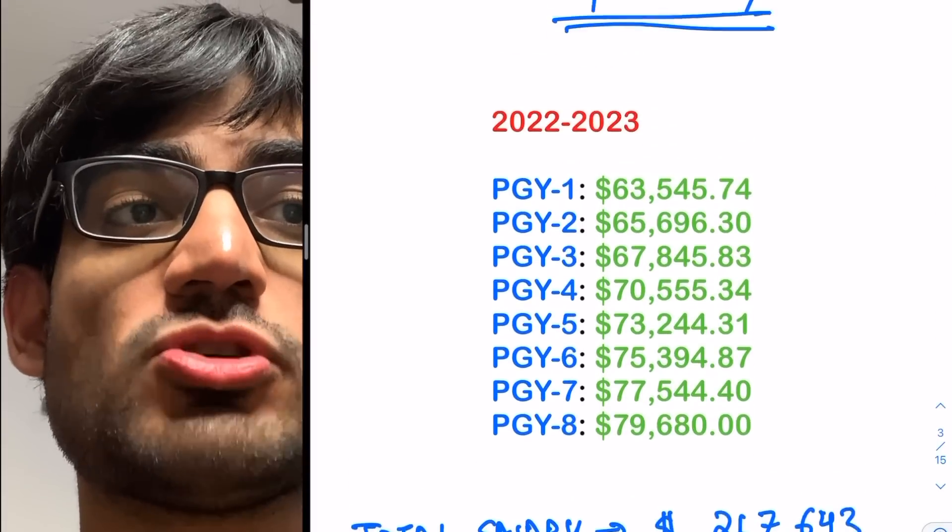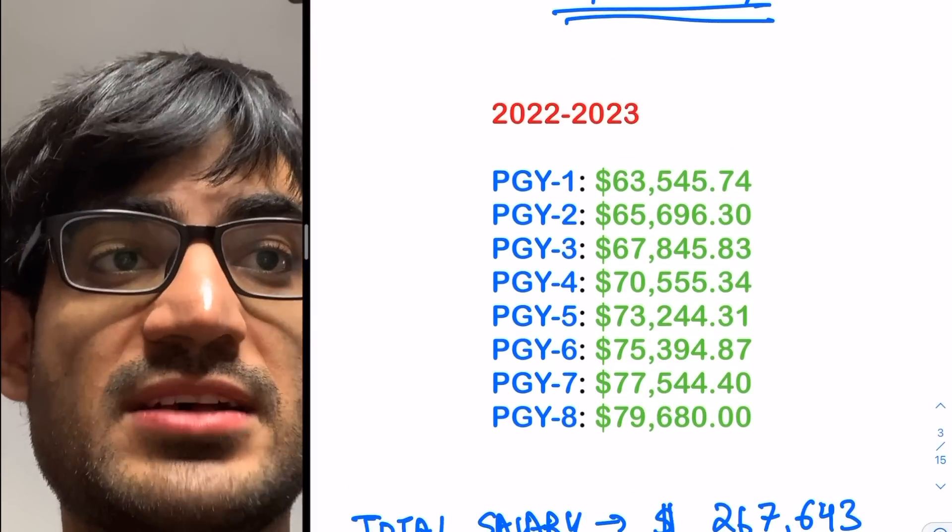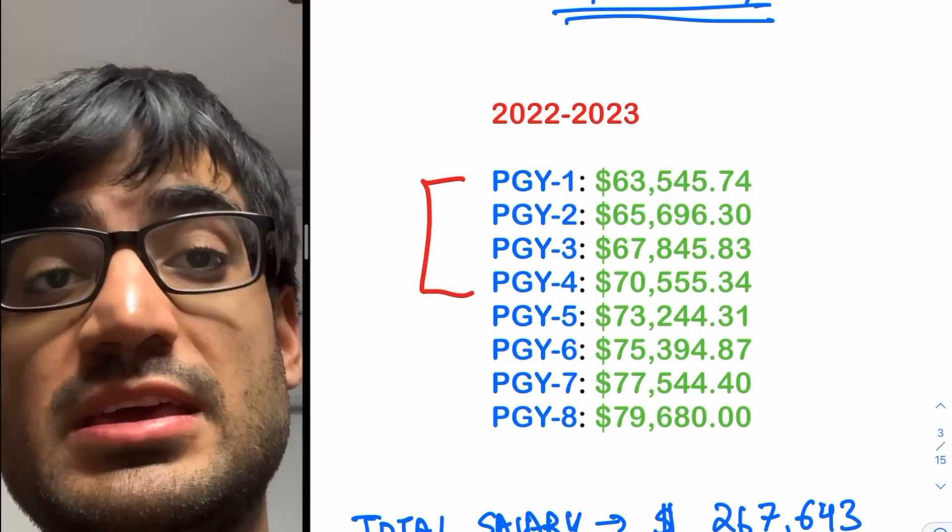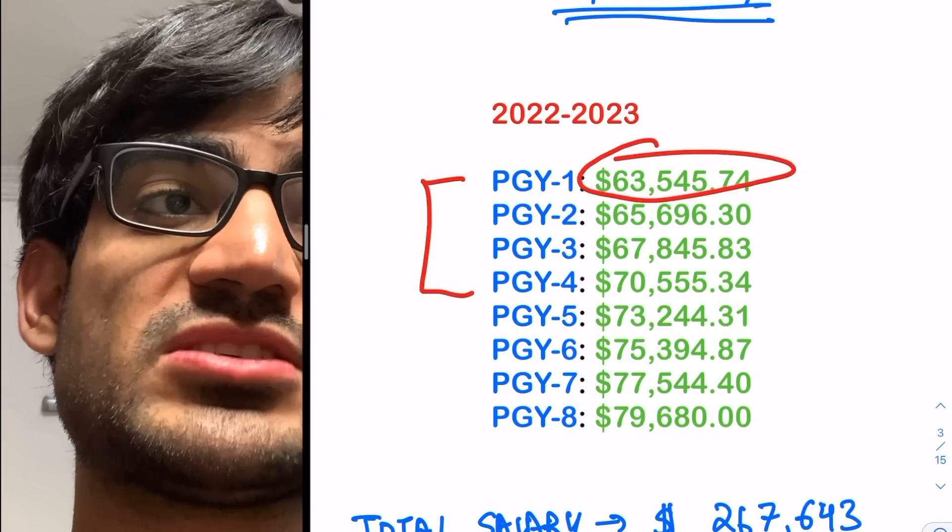Now let's talk about my salary. So I am going to Pennsylvania, specifically Hershey, and my salary will be this. So I'll be doing my four PGY years from my residency program, and my starting salary would be about $63,000.